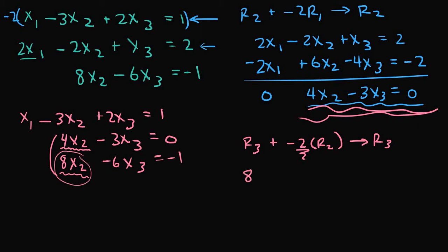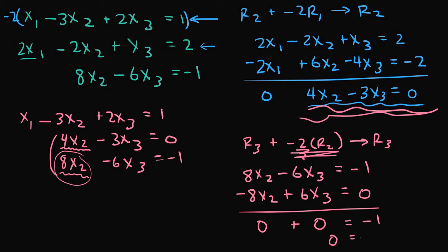So r3 is 8x2 minus 6x3 is equal to negative 1, and negative 2 times r2 would give us negative 8x2 plus 6x3 is equal to 0. So when I add these two equations together, this is 0, plus negative 6x3 plus 6x3, this is 0, and then negative 1 plus 0 is negative 1. So we're left with 0 equals negative 1.